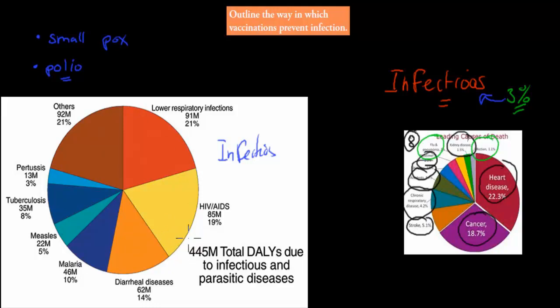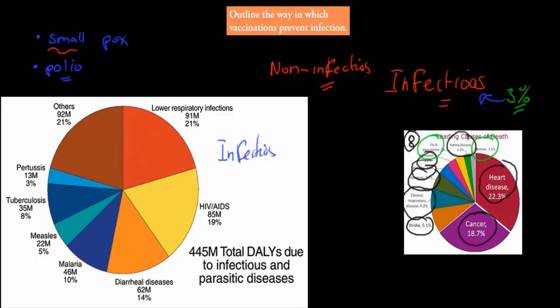We don't have a problem with smallpox anymore, even though 100 years ago it was the main killer. Not only did we have a shift from infectious to non-infectious diseases in the developed world, but diseases which used to be massive killers have now been more or less completely eliminated.